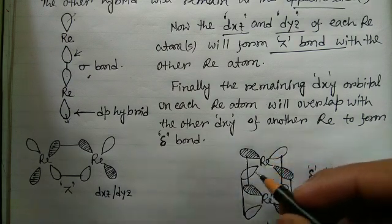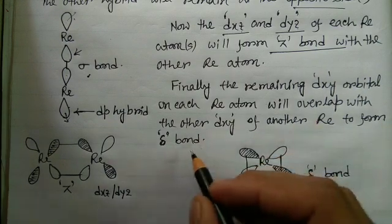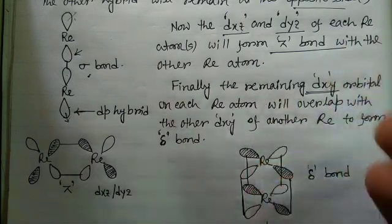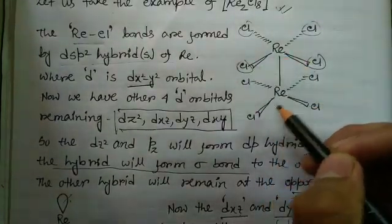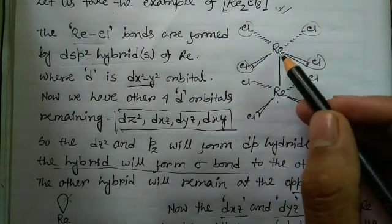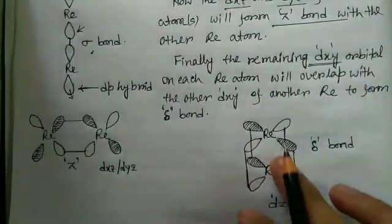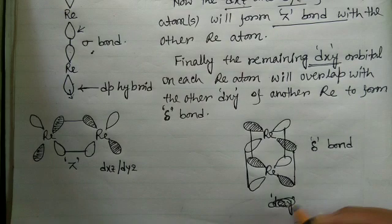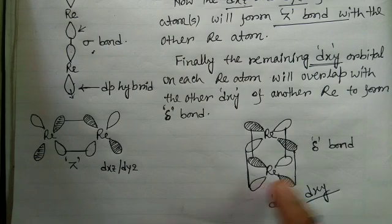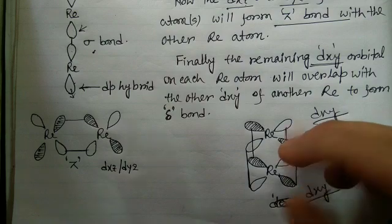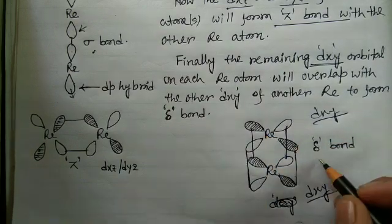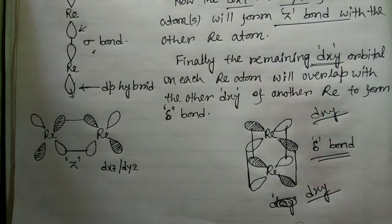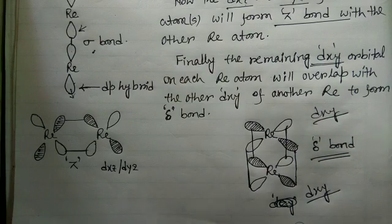After all this, there is another orbital on each rhenium — the dxy orbital, which lies on the xy plane. If the complex attains a geometry where all the chlorines of both rhenium atoms are eclipsed rather than staggered, then the dxy of one rhenium and the dxy of the other will also be eclipsed and perfectly parallel, allowing overlap. This overlap forms the delta bond — a new type of bond you may not have encountered before, unlike sigma and pi bonds.